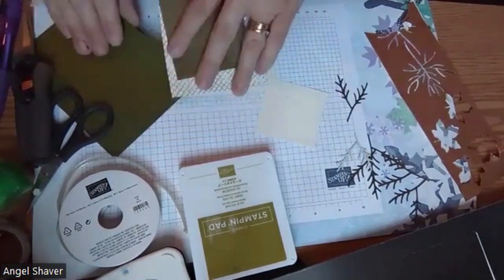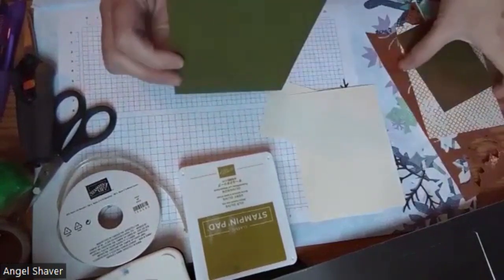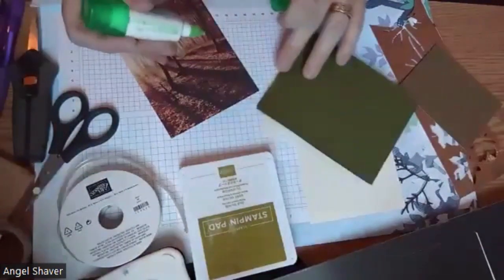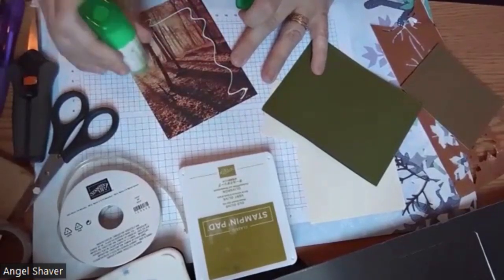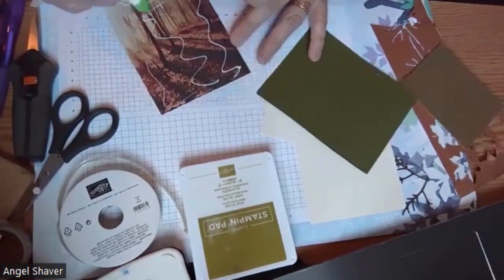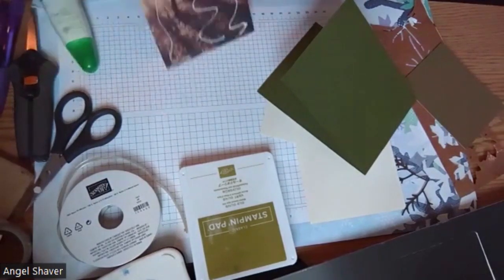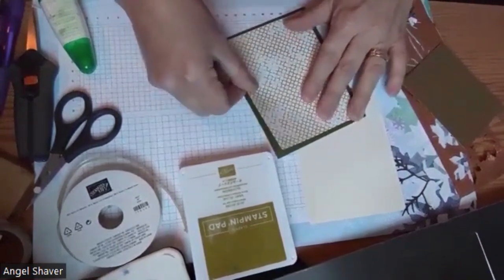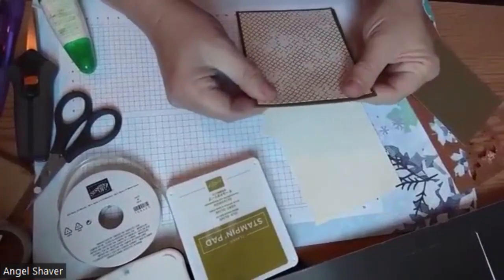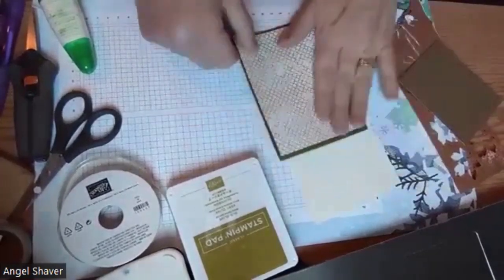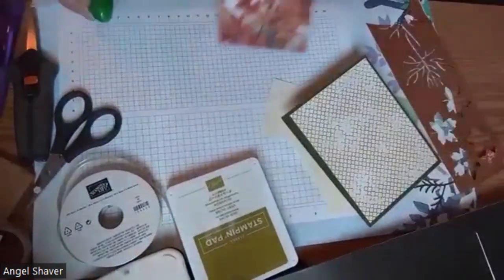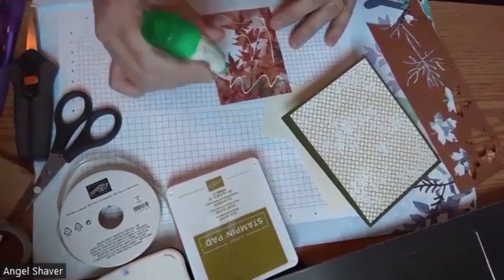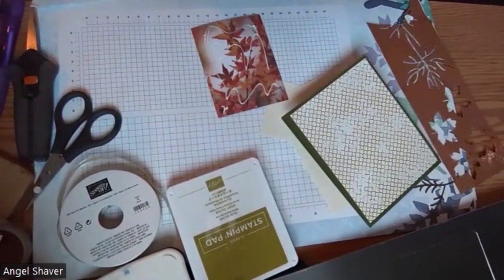First thing I'm going to do is go ahead and adhere my designer series paper to my card front. I'm using the liquid glue because I like that it gives me a minute to adjust my paper once I lay it down so it's not stuck in place yet. I just slide it around a little bit. And then I'll be putting down the 3 by 4 inch paper.